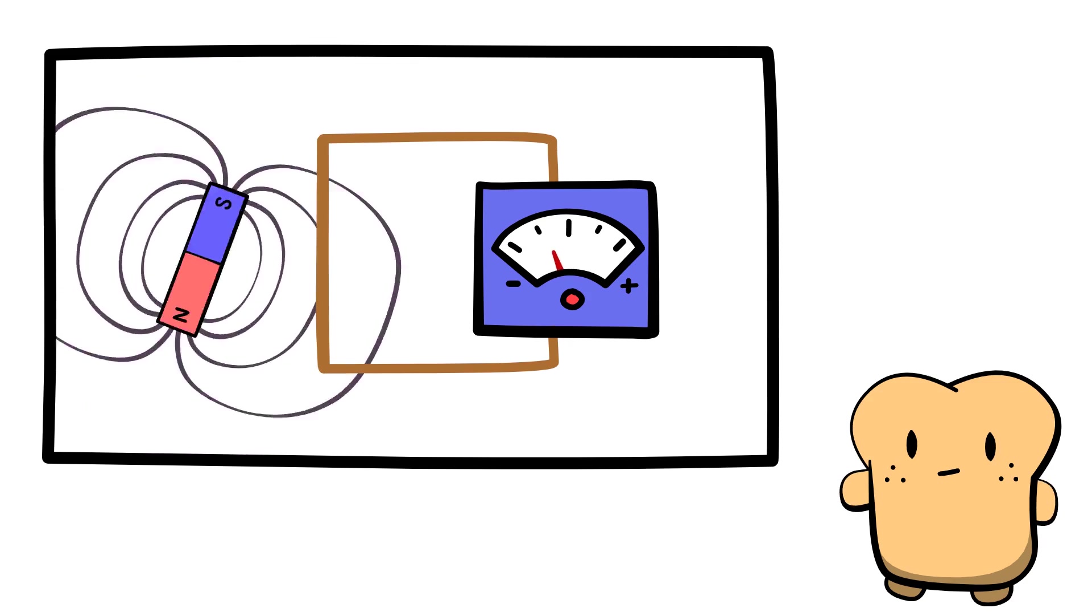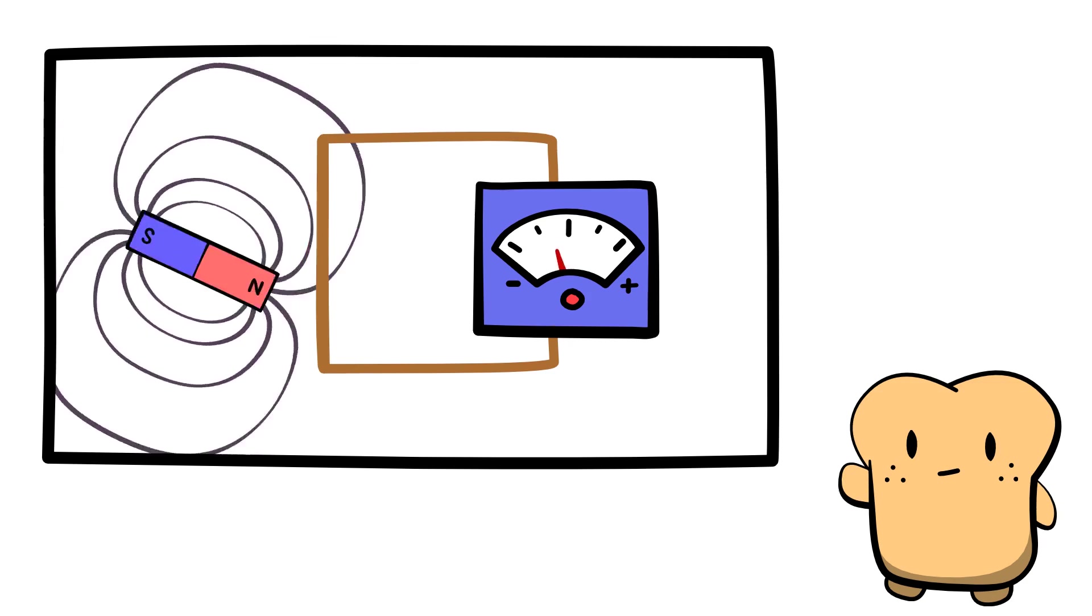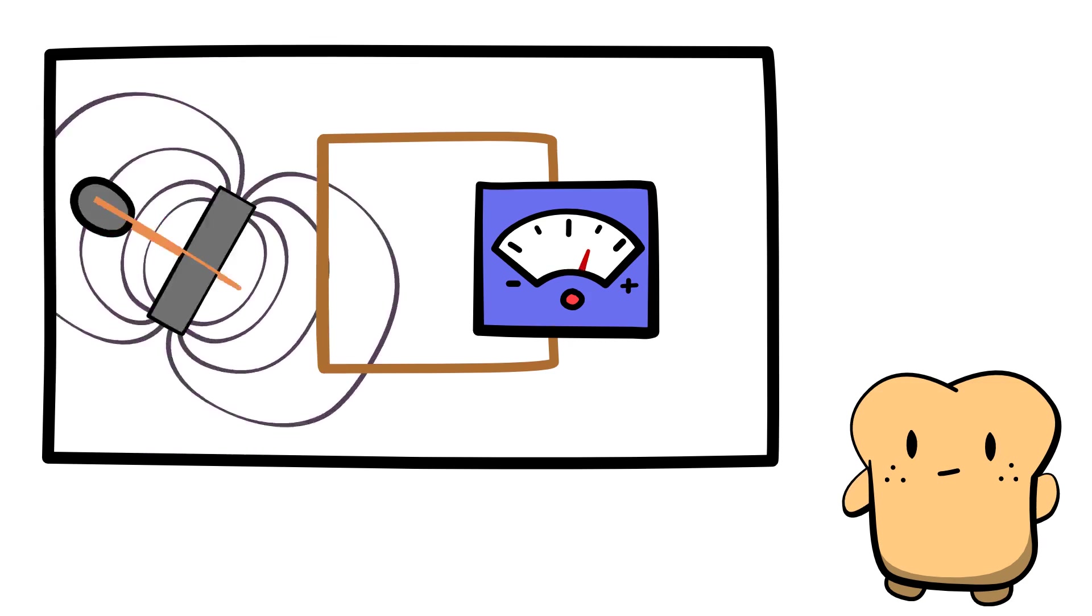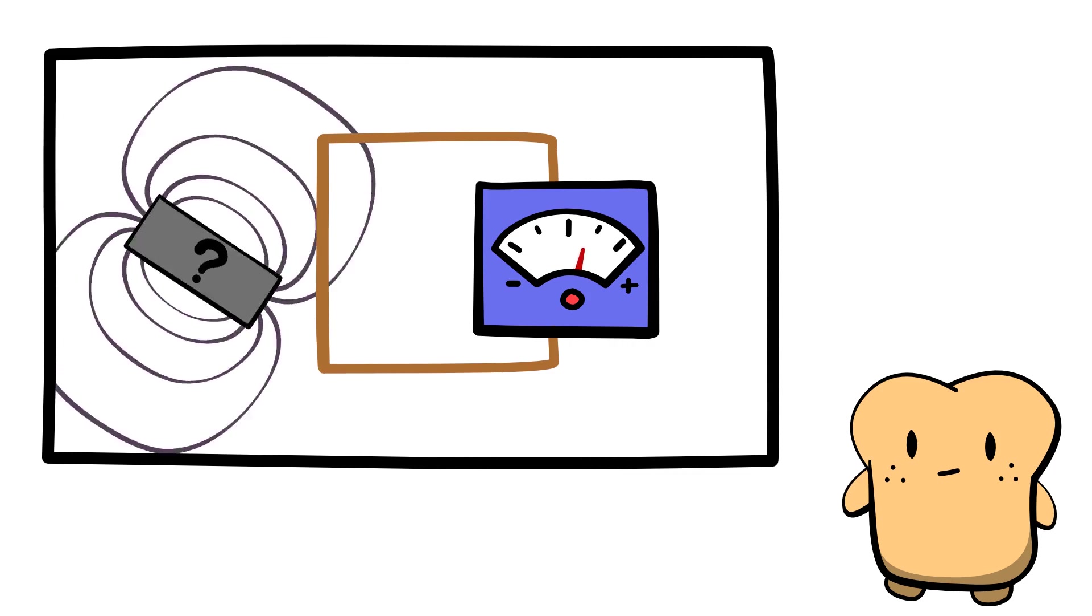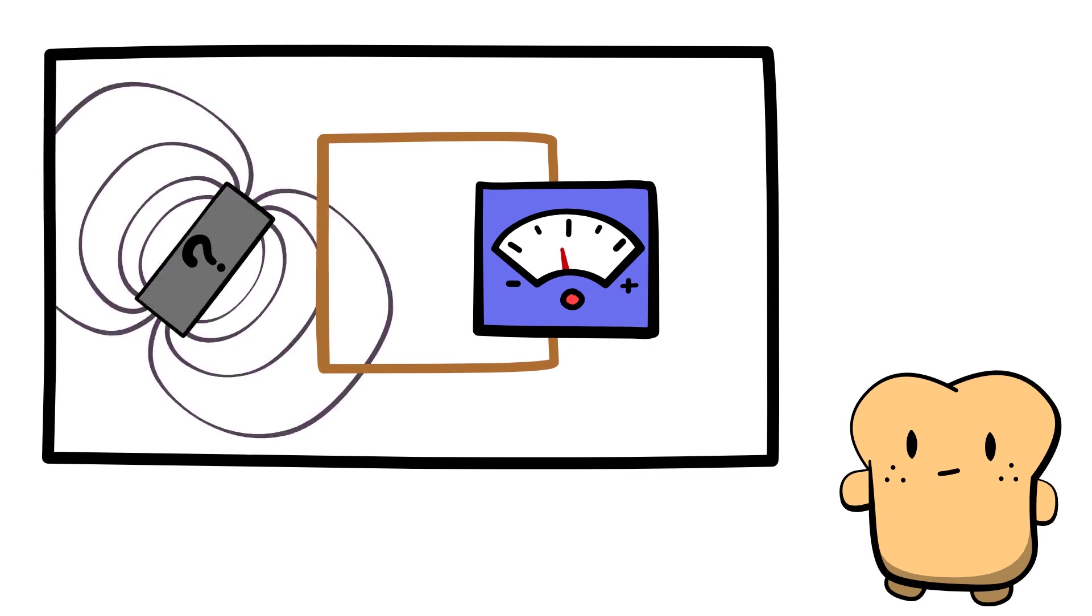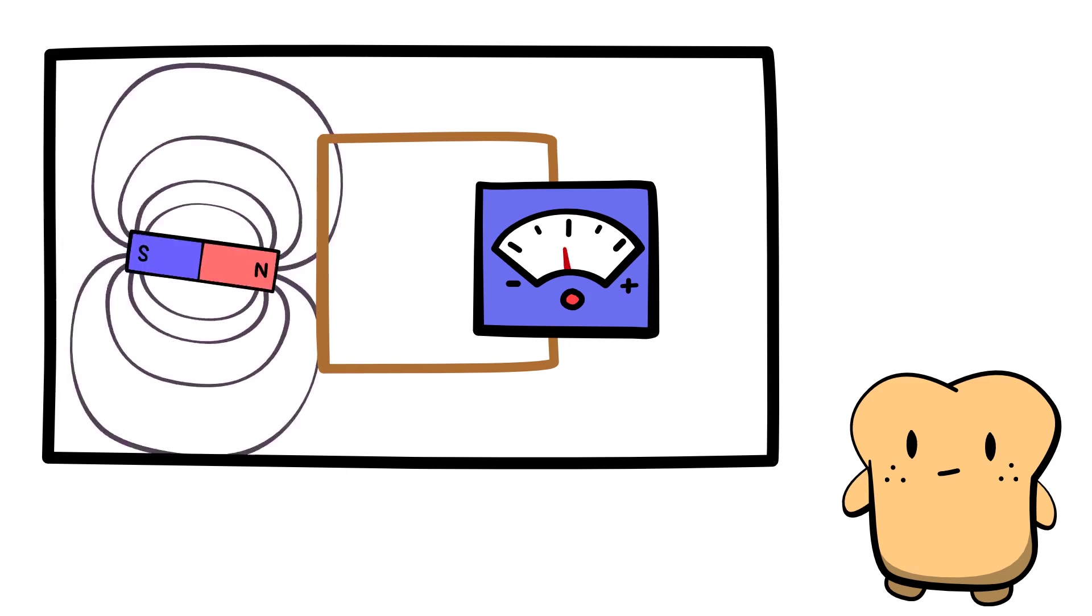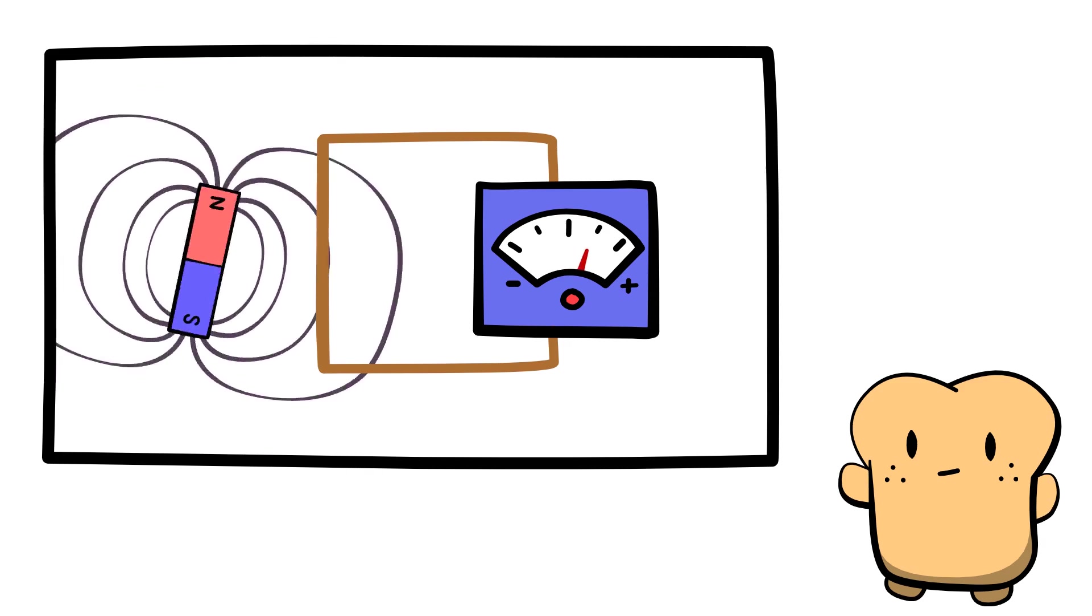And the source of the field doesn't matter, whether it's a field from a permanent magnet, the field around a current carrying wire, or some other source of magnetic field that we've yet to discover. As long as we're able to change the magnetic flux, we're able to produce an electromotive force.